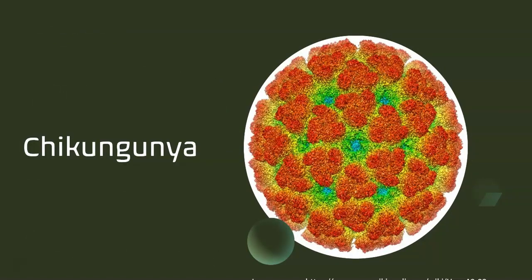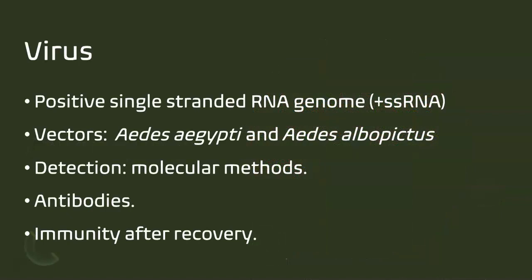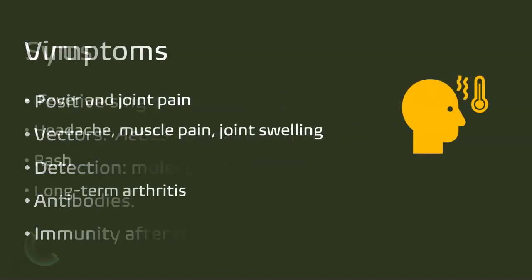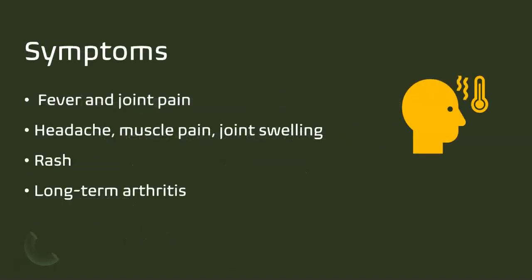Chikungunya is another virus with similar symptoms to dengue. It is also an arbovirus, a single-stranded RNA virus, with the same vectors as dengue. Detection uses the same molecular methods — real-time quantitative PCR or reverse transcription quantitative PCR. Generally, individuals develop immunity after recovery. Symptoms are similar to dengue: fever, joint pain, and muscle pain, and in some cases there may be long-term arthritis.